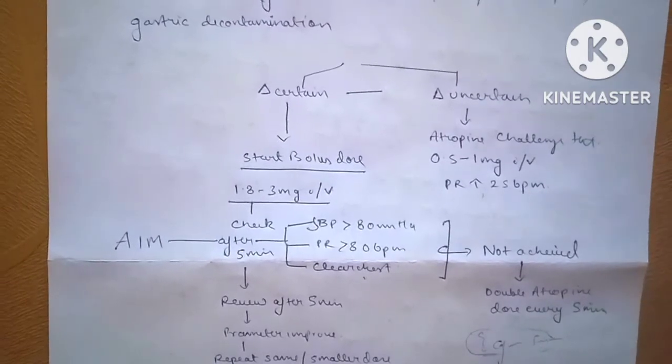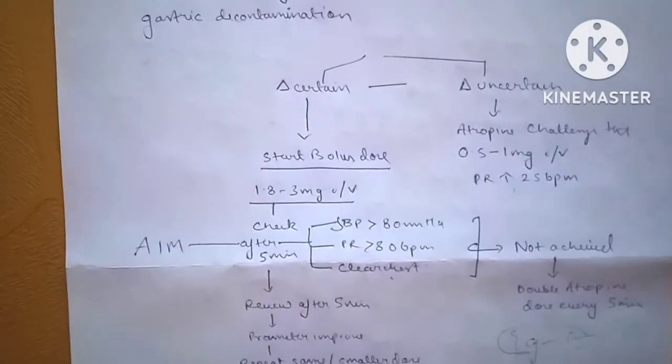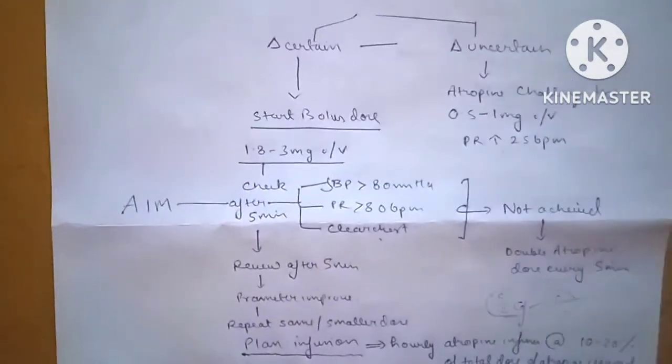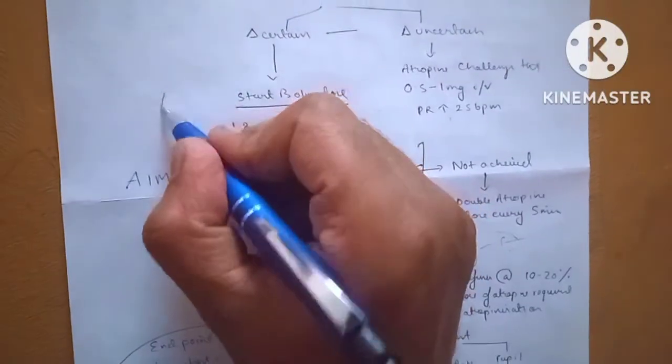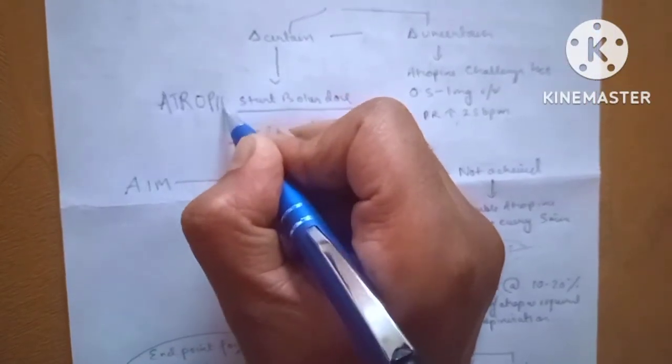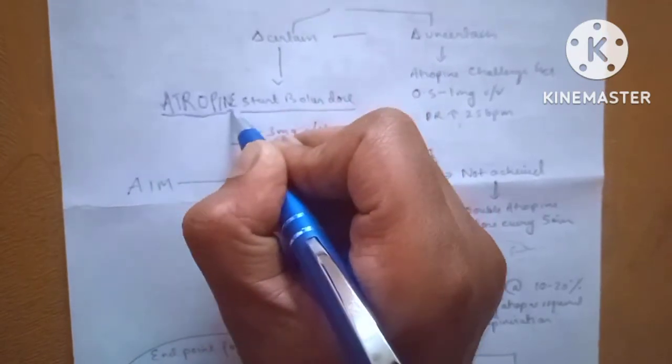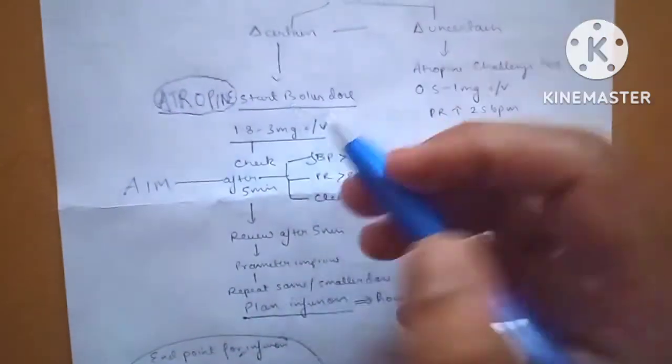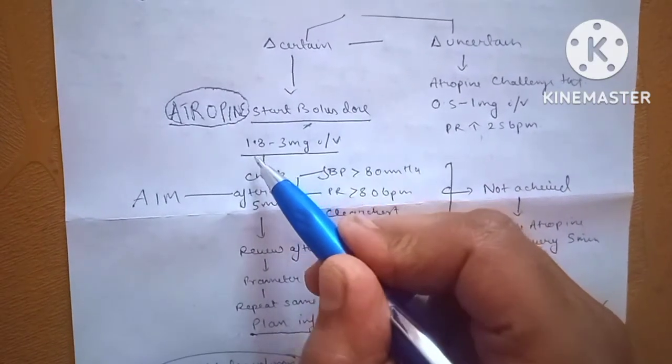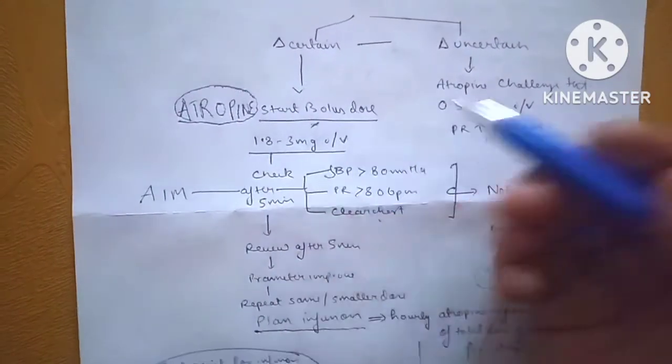In cases where diagnosis is already certain for OP poisoning, we start with the drug of choice, that is atropine. Atropine is started at a bolus dose. The bolus dose for atropine is around 1.8 to 3 mg intravenously.